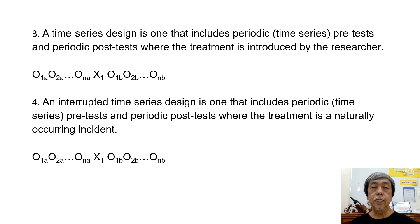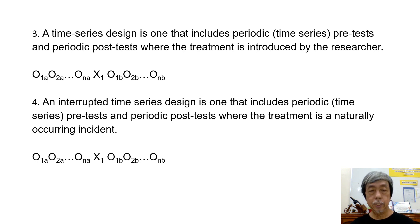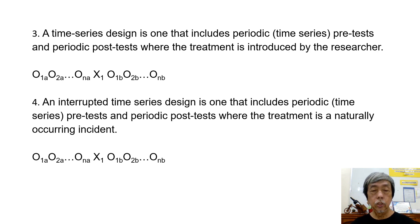The third is the time series design, which includes periodic or time series pre-tests and periodic post-tests, where the treatment is introduced by the researcher. Shown is the plan for the time series design. The fourth is the interrupted time series design, which includes periodic pre-tests and periodic post-tests, where the treatment is a naturally occurring incident. Shown is the plan for the interrupted time series design.